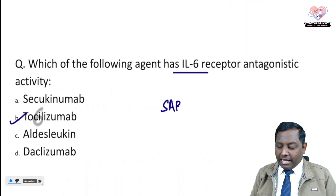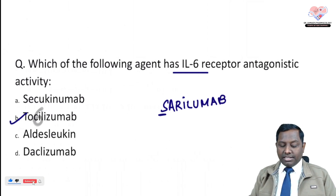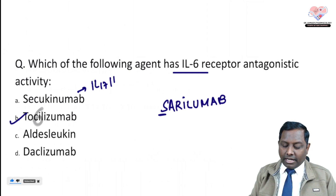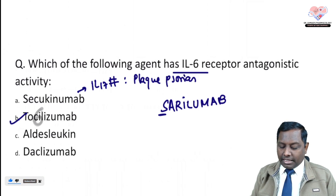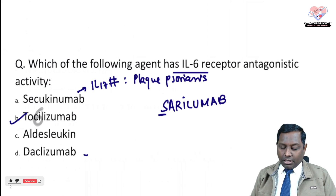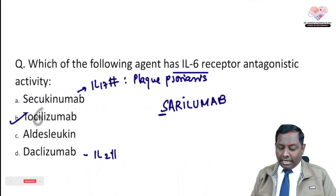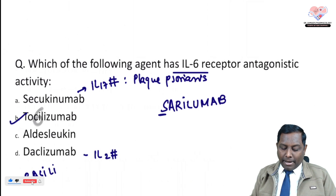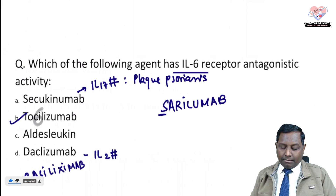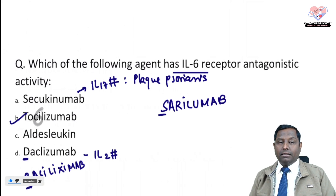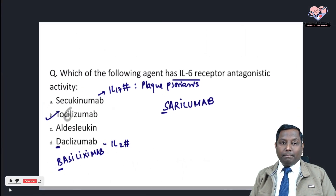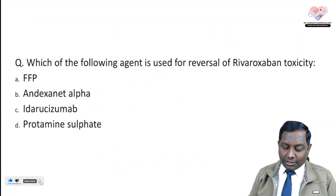There is one more IL-6 antagonist: sarilumab — it is a fully human monoclonal antibody. Secukinumab is an interleukin-17 antagonist, mainly utilized in chronic plaque psoriasis. Daclizumab is an interleukin-2 antagonist, and basiliximab is also an interleukin-2 antagonist. Mnemonic: D is for 'do' and B is the second letter — daclizumab and basiliximab for IL-2.